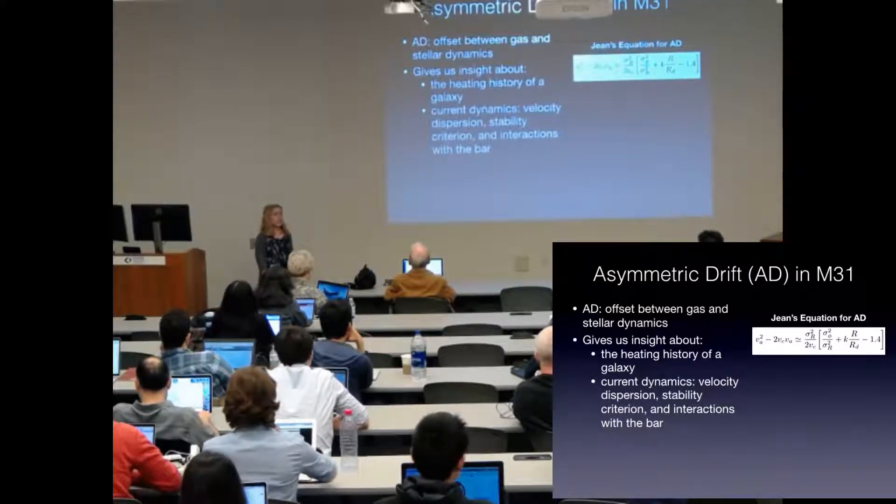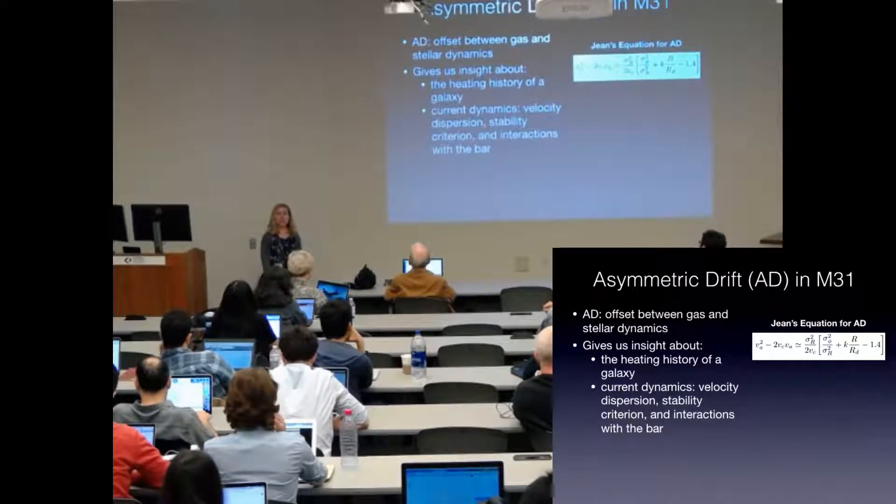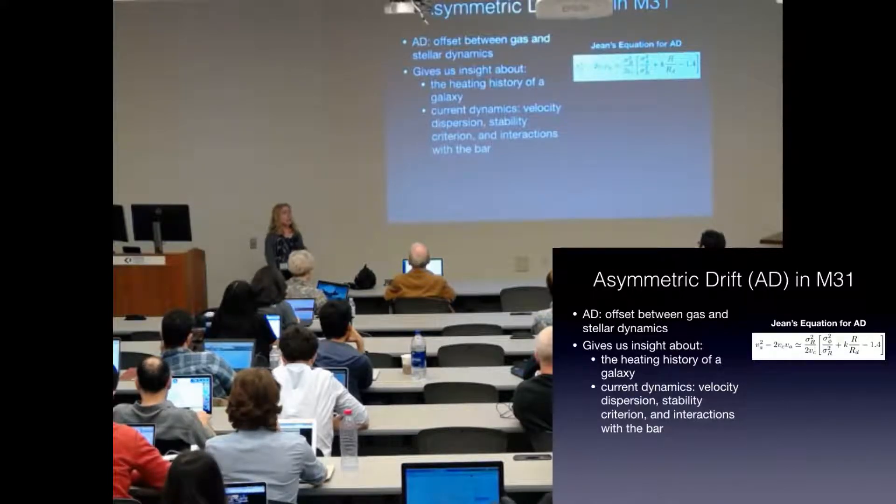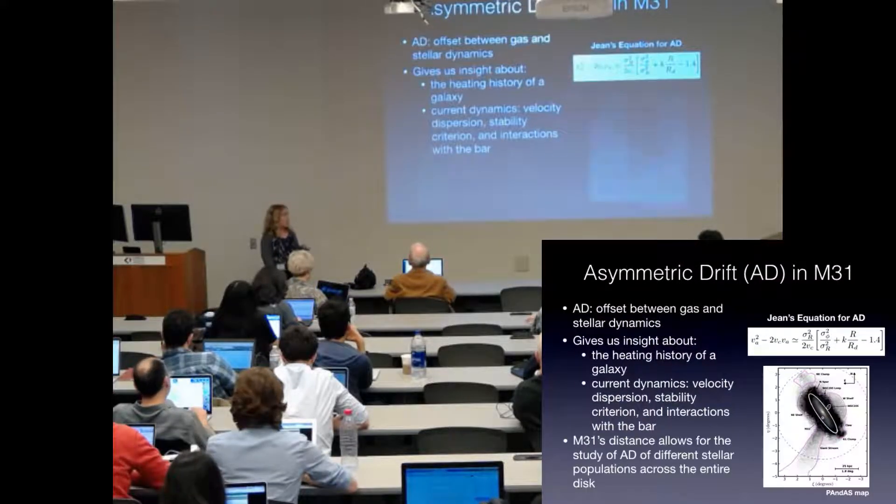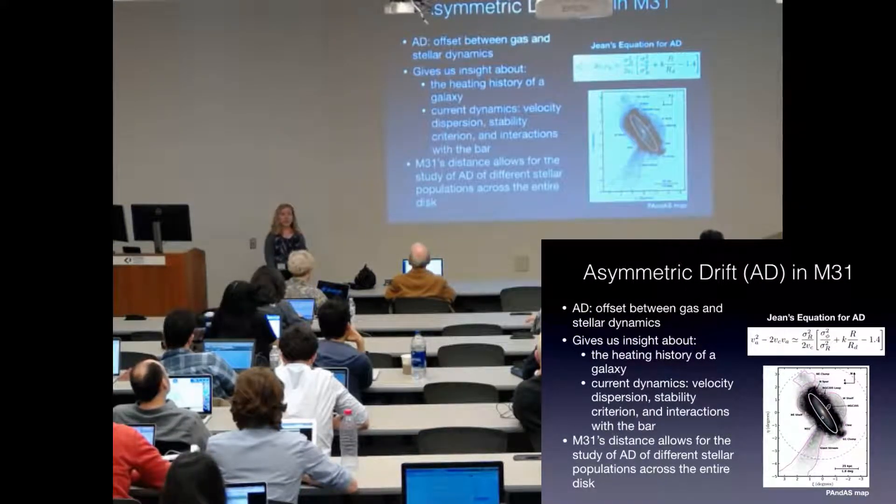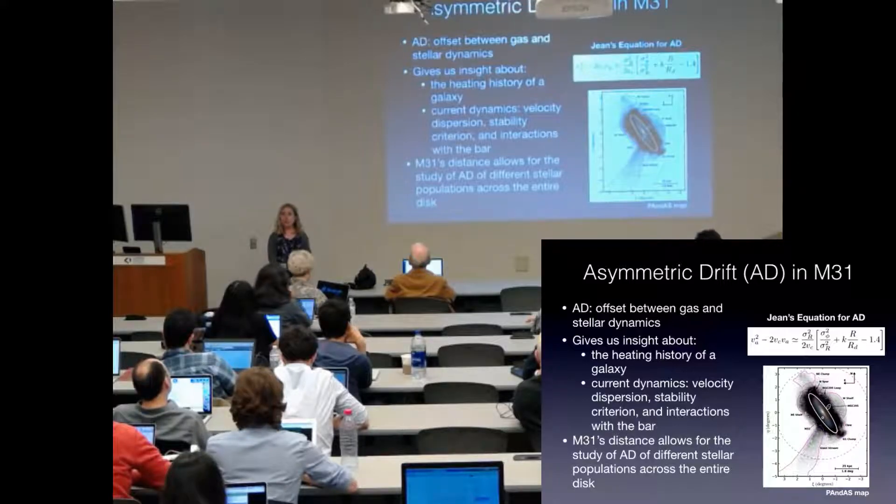It also tells us about the current state of dynamics including velocity dispersion, stability criterion, and whether or not there are interactions going on with the bar. This is particularly interesting for M31 because it's had such a violent history of mergers.